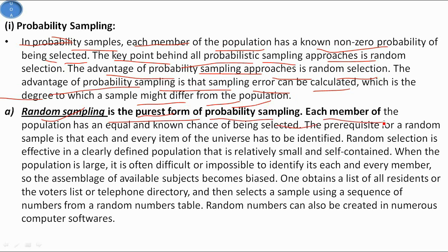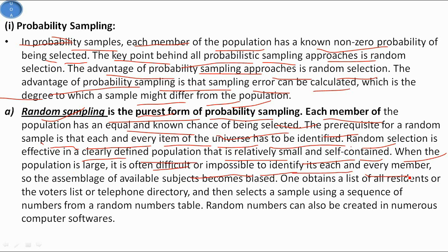Random sampling is the purest form of probability sampling. Each member of the population has equal and known chances of being selected. The prerequisite is that each and every item of the universe has to be identified. Random selection is effective in a clearly defined population that is relatively small and self-contained. When the population is large, it is often difficult to identify each member. One obtains a list — such as a voter list or telephone directory — and selects a sample using a random numbers table. Random numbers can also be generated by computer software.